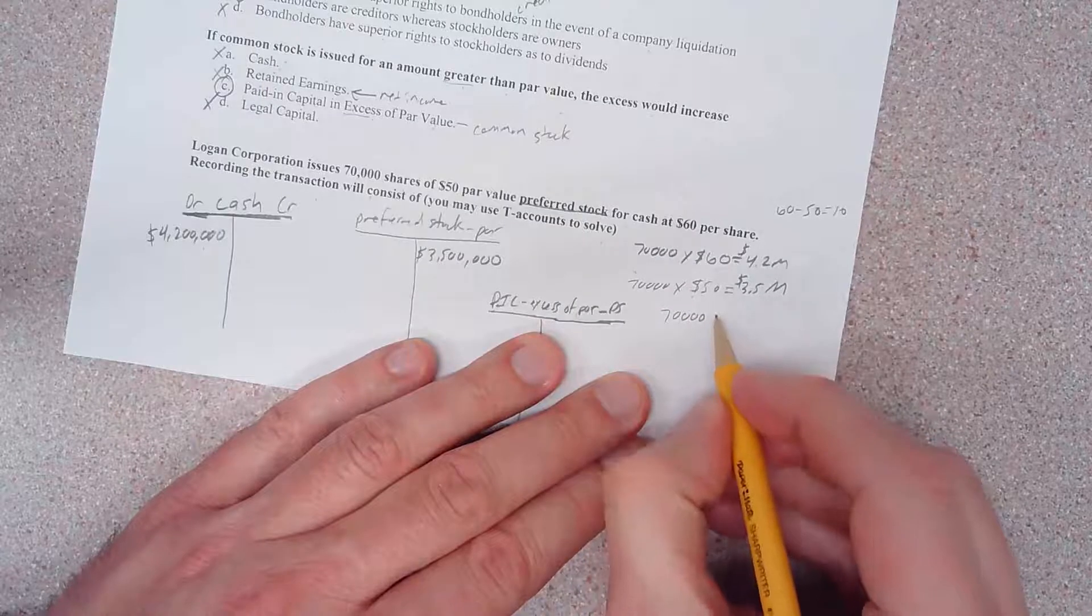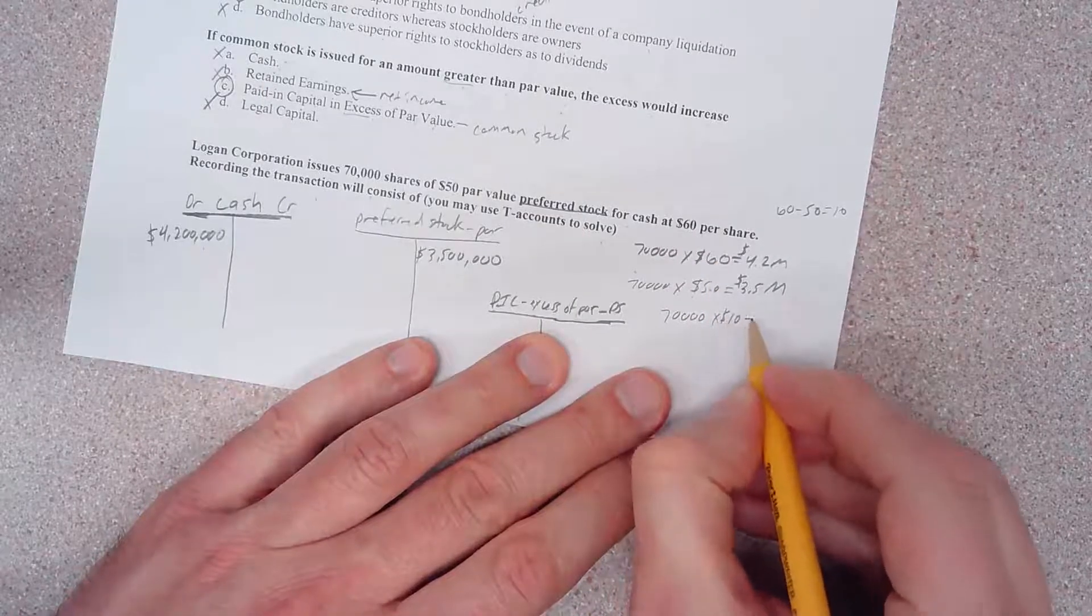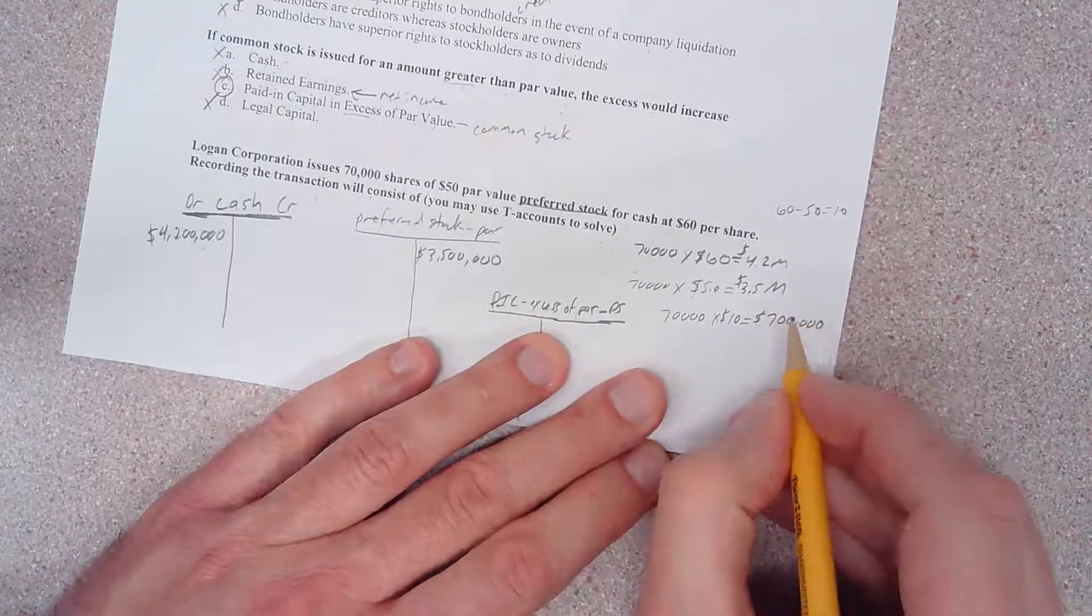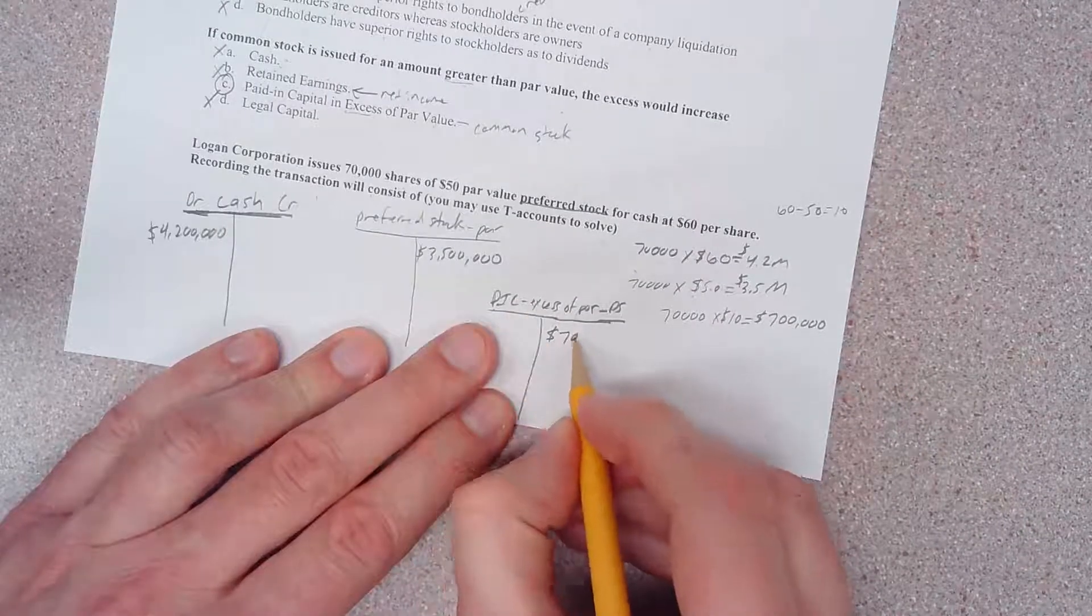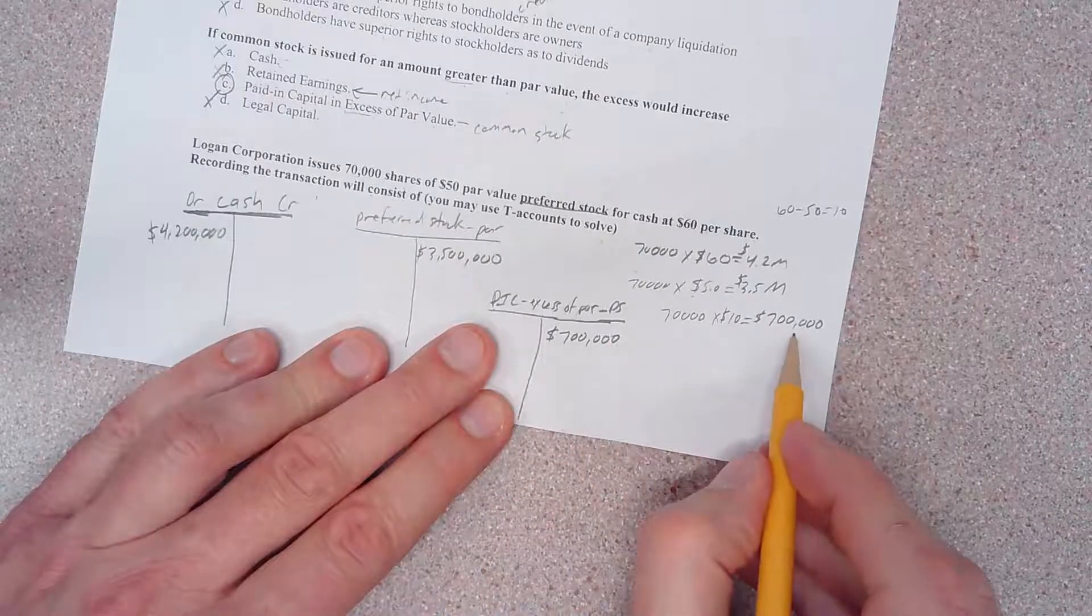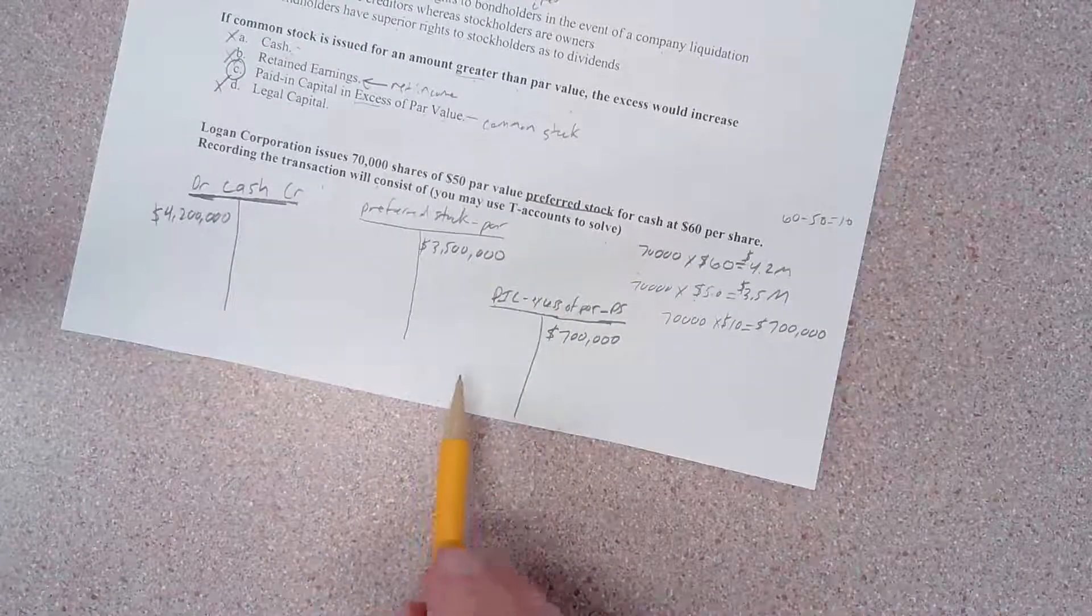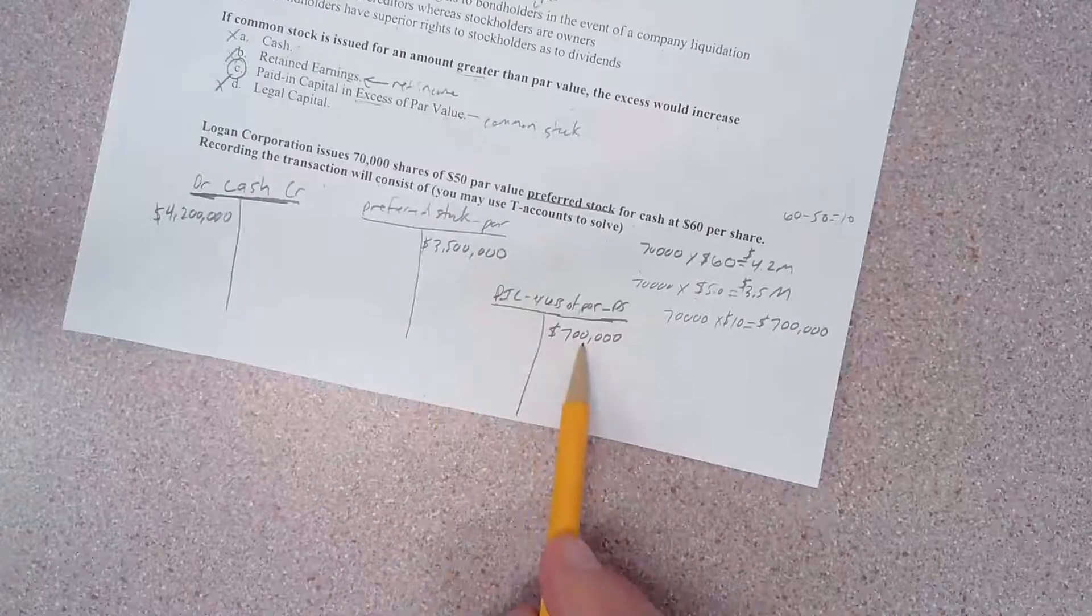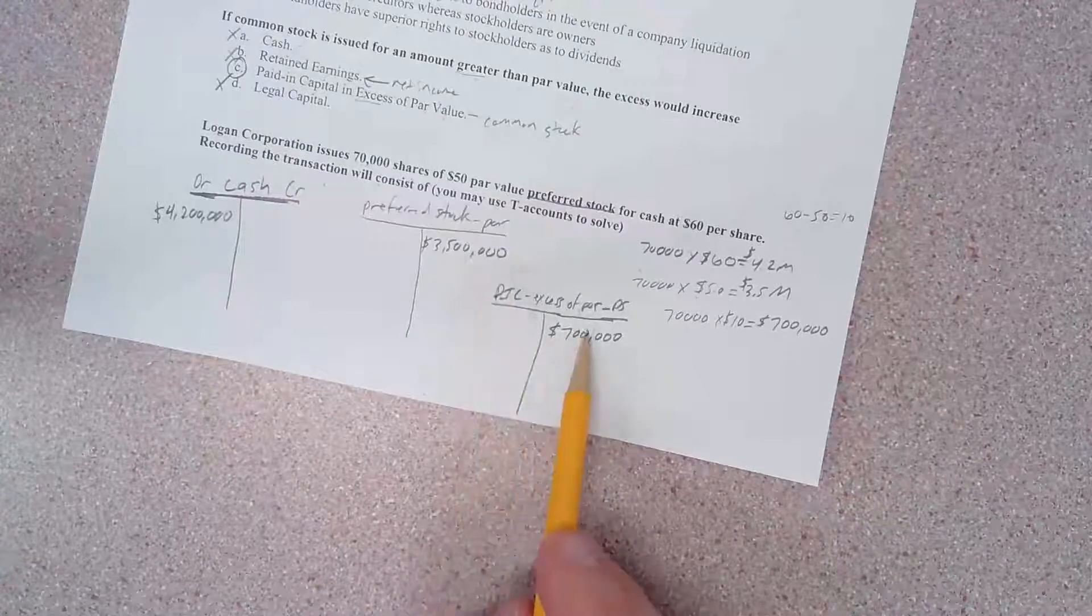If we take our 70,000 shares times the difference between $60 and $50 - that's $10 - and we execute that out, it's going to be $700,000. And again, this is a paid-in capital equity account, so we're going to plot that $700,000 over here on the right side. Now let's see if we've done this correctly. If we add the $3.5 million preferred stock and the $700,000 paid in capital excess of par, those two figures come to $4.2 million, and that matches our debit of $4.2 million.